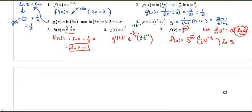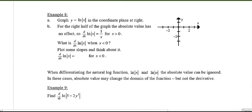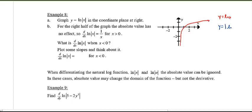Before more derivatives, let's look at example eight. I want you to graph the natural log of the absolute value of x. Remember, the natural log function looks like this. Taking the absolute value of x means taking all the negative x values, making them positive, and reflecting the graph as a mirror image on the other side. So we get y equals natural log of the absolute value of x. For the right half of the graph, the absolute value has no effect — it's the same as before.